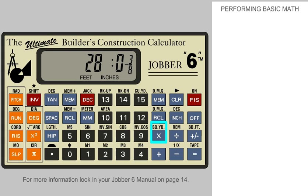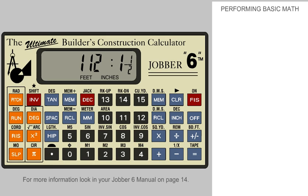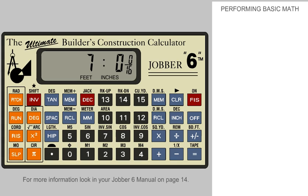Now, let's multiply this by 4 feet even. Now, let's divide this number into 7 spaces. We added two extra zeros to move the 7 into the whole number position. So each space is 16 feet, 0 and 3 sixteenths inches.